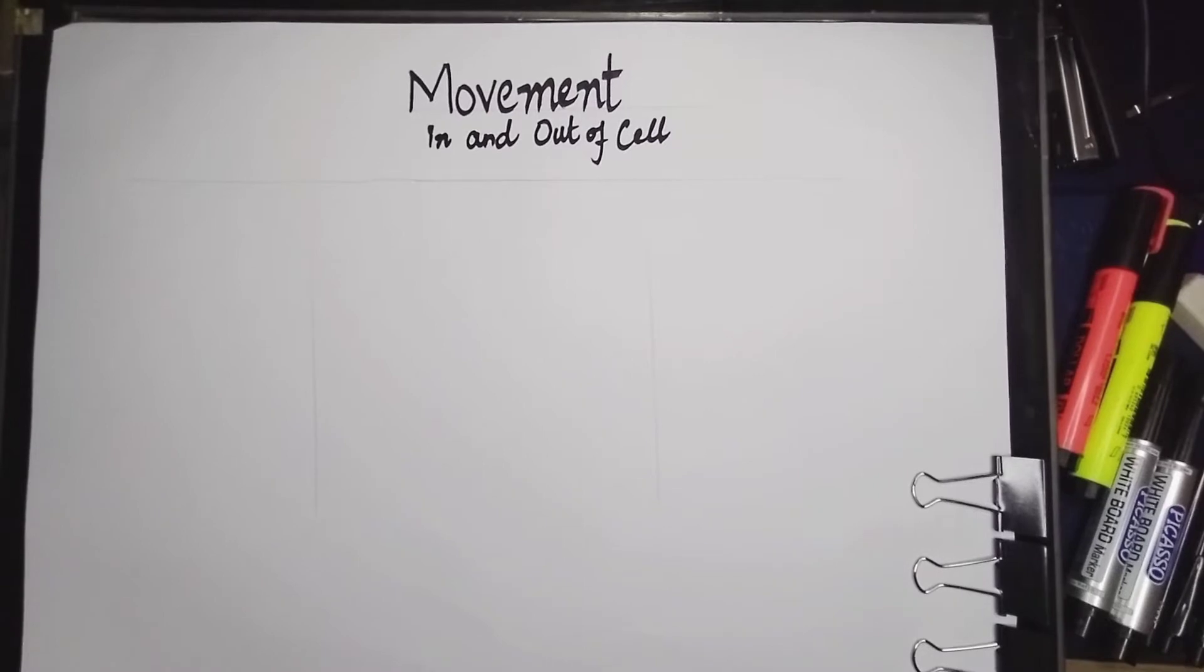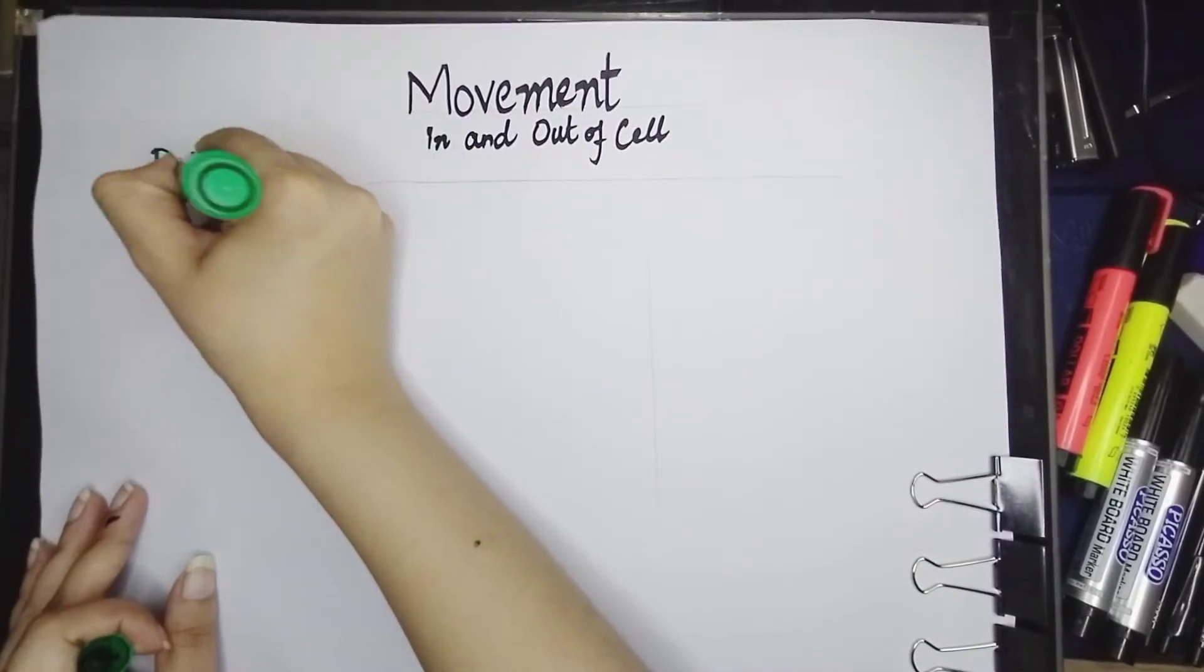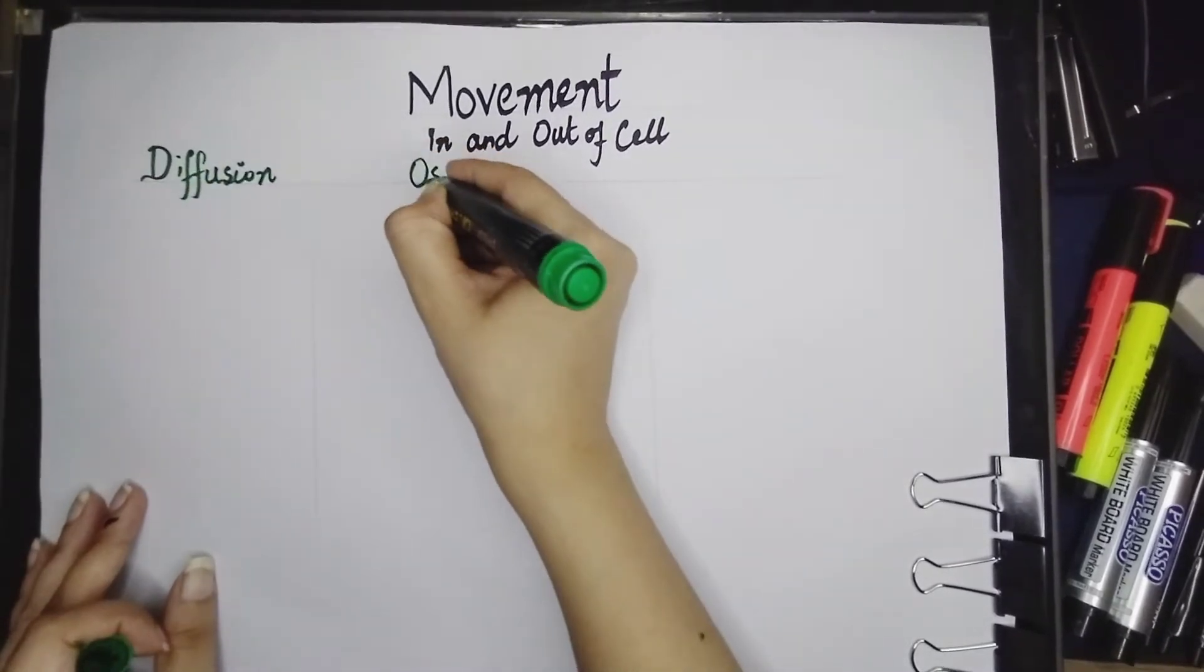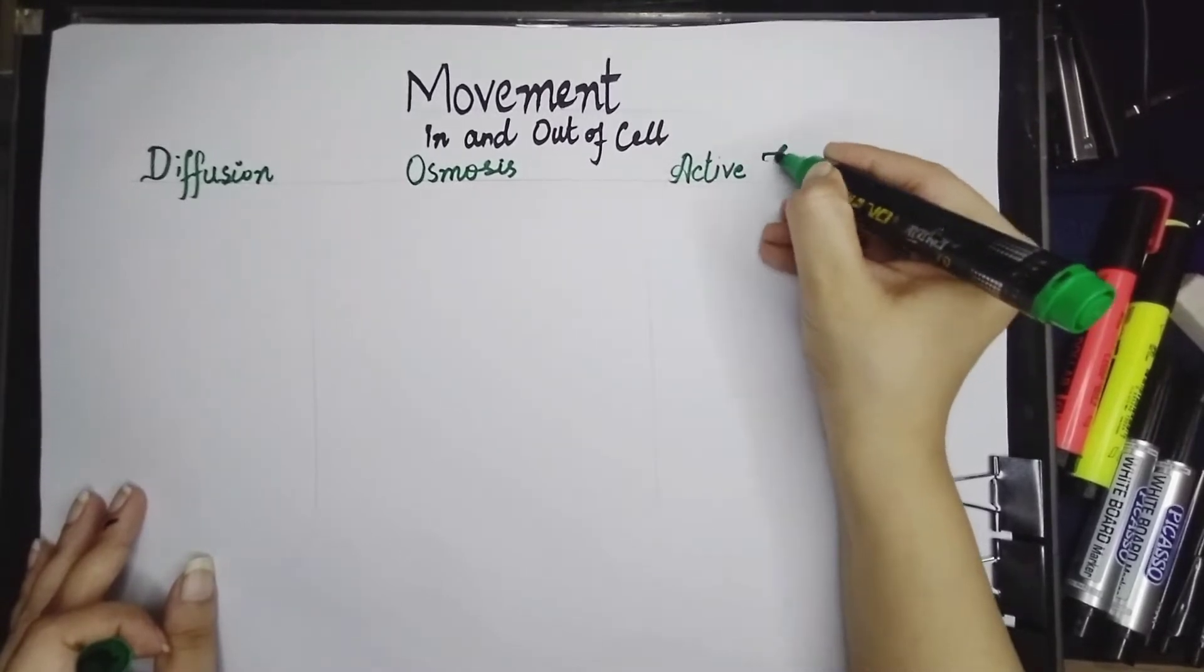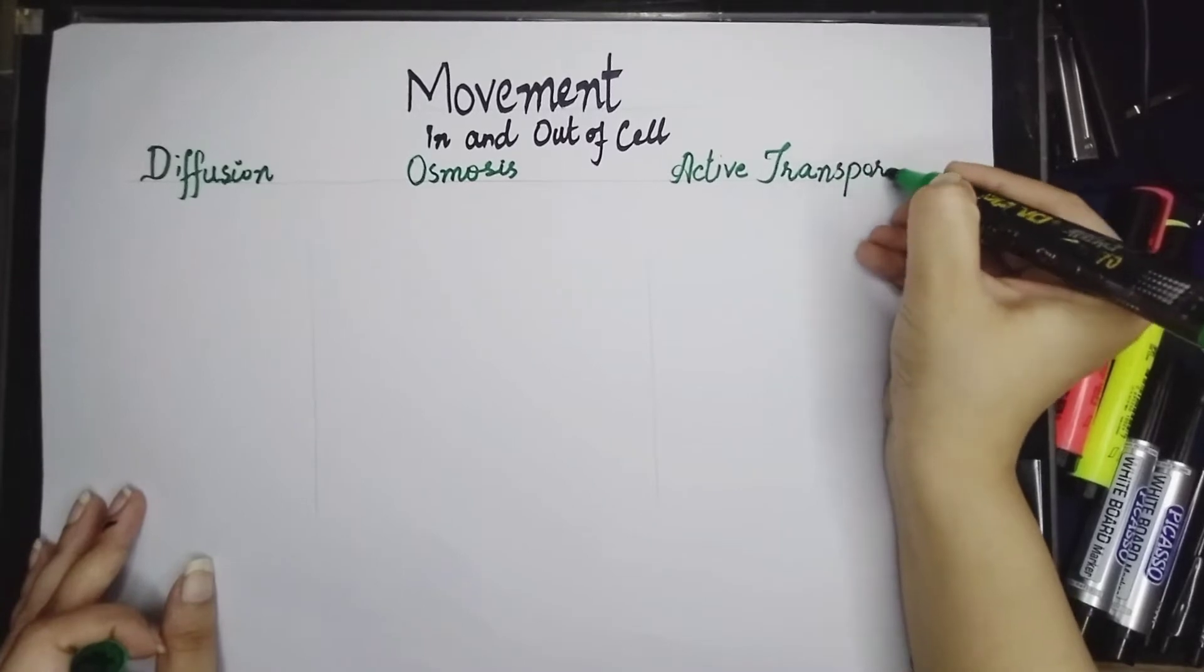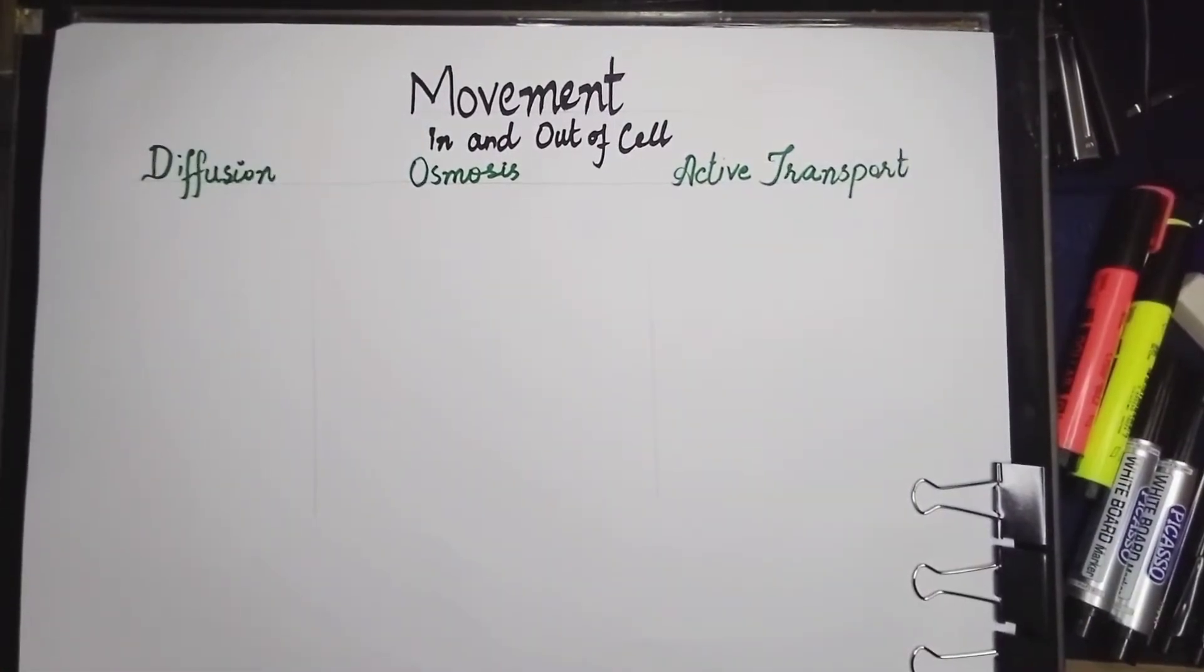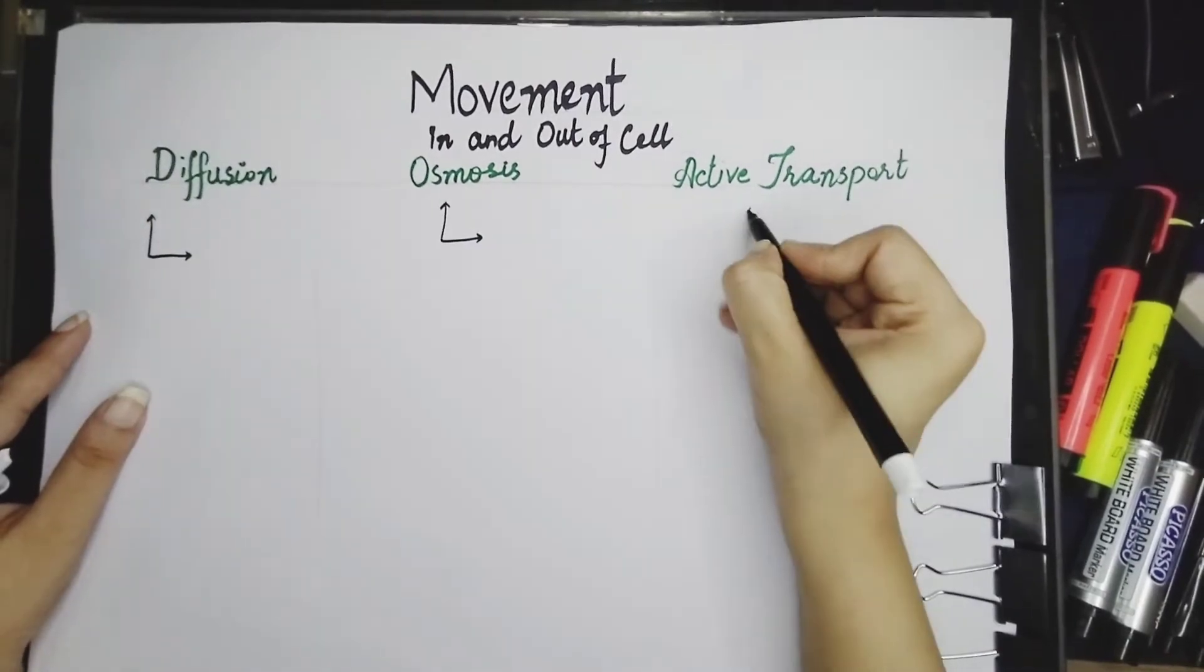There are basically three types of movements. First is diffusion. You might have heard of this term in your chemistry. Then we have osmosis and the third one is active transport. In the examination, they ask you to differentiate between these three types of movements and they also want to know what is the role of concentration gradient in all these types of movements.